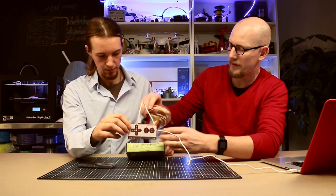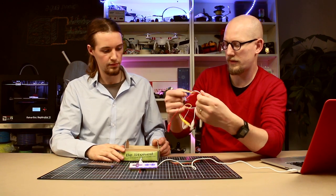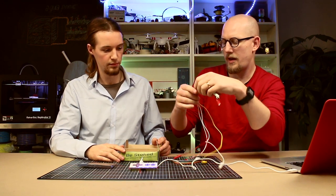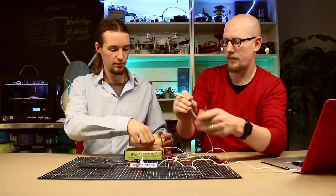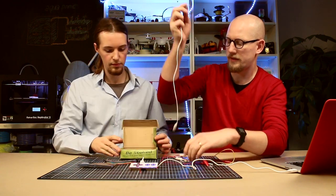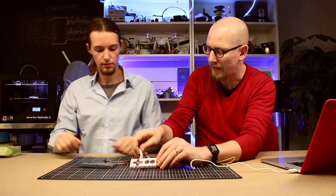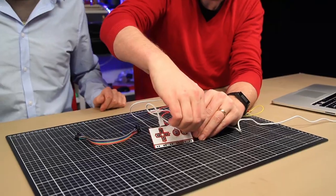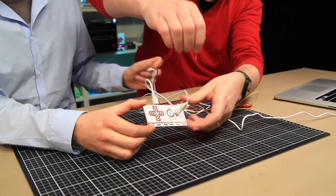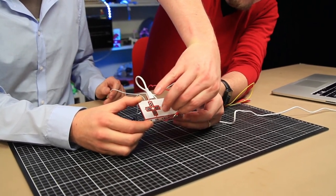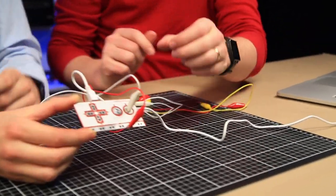And then inside of the box, there's also these crocodile clamps. Yes. And if we take two of those, we plug one inside of the click, for example, and another one in earth. Yes. Right, yeah. So we go down there, and it doesn't matter which one. No, because it's all the same.